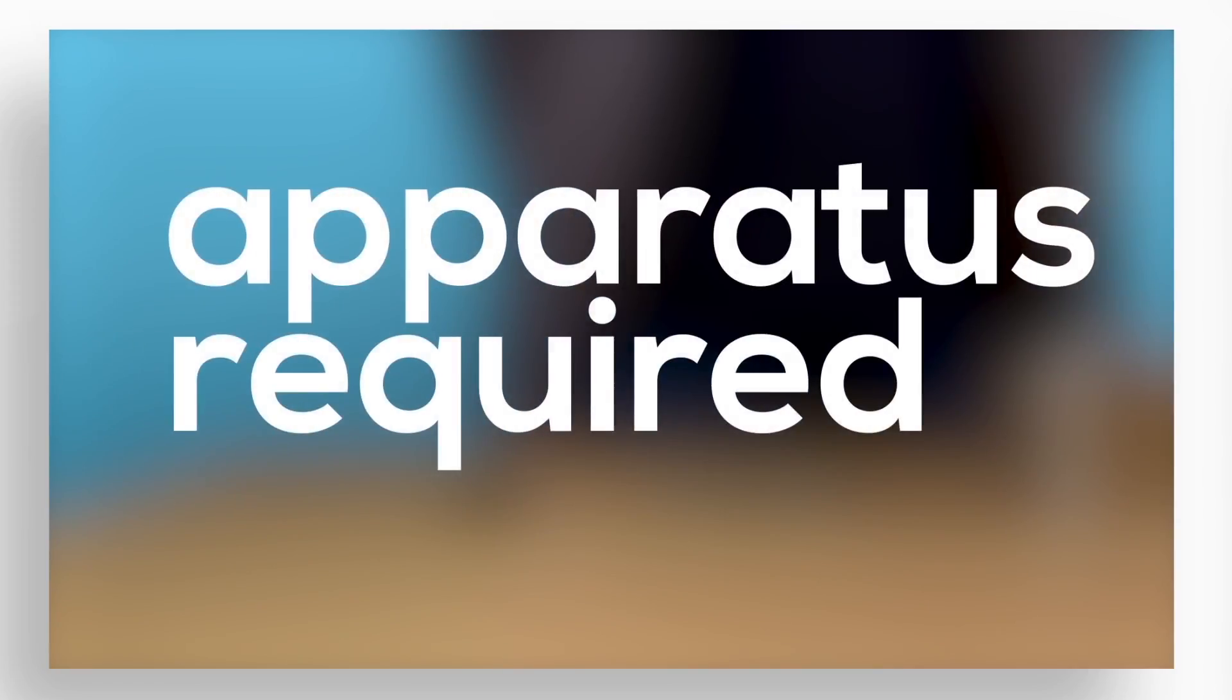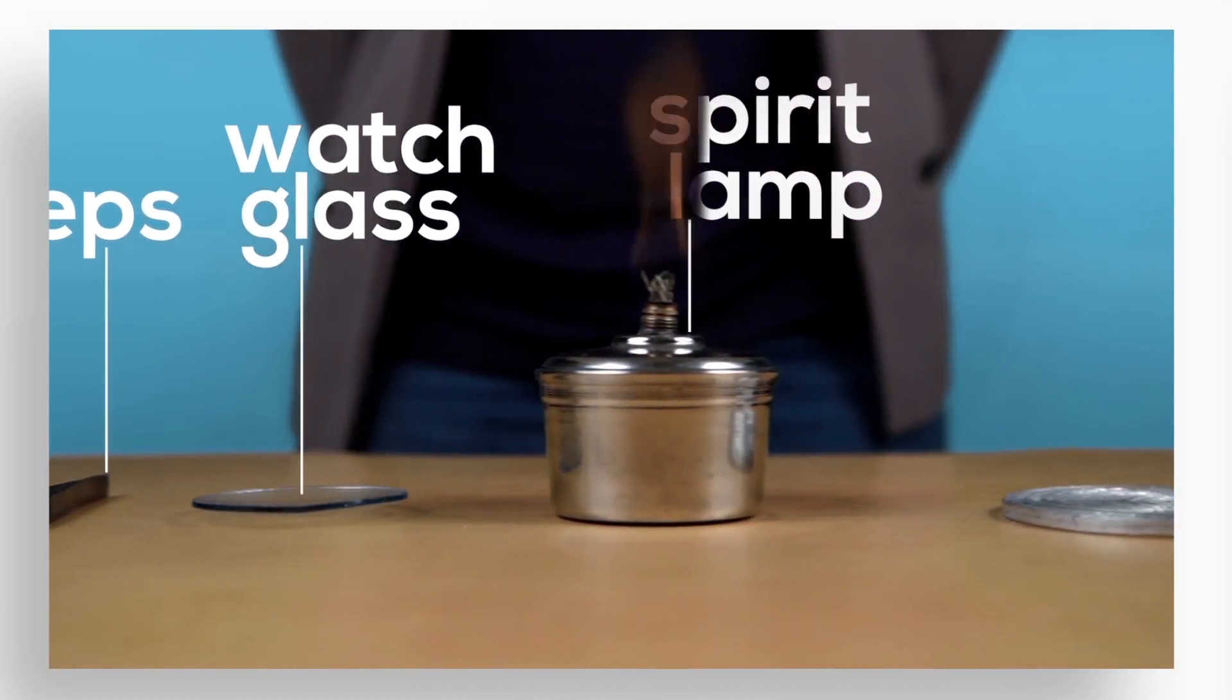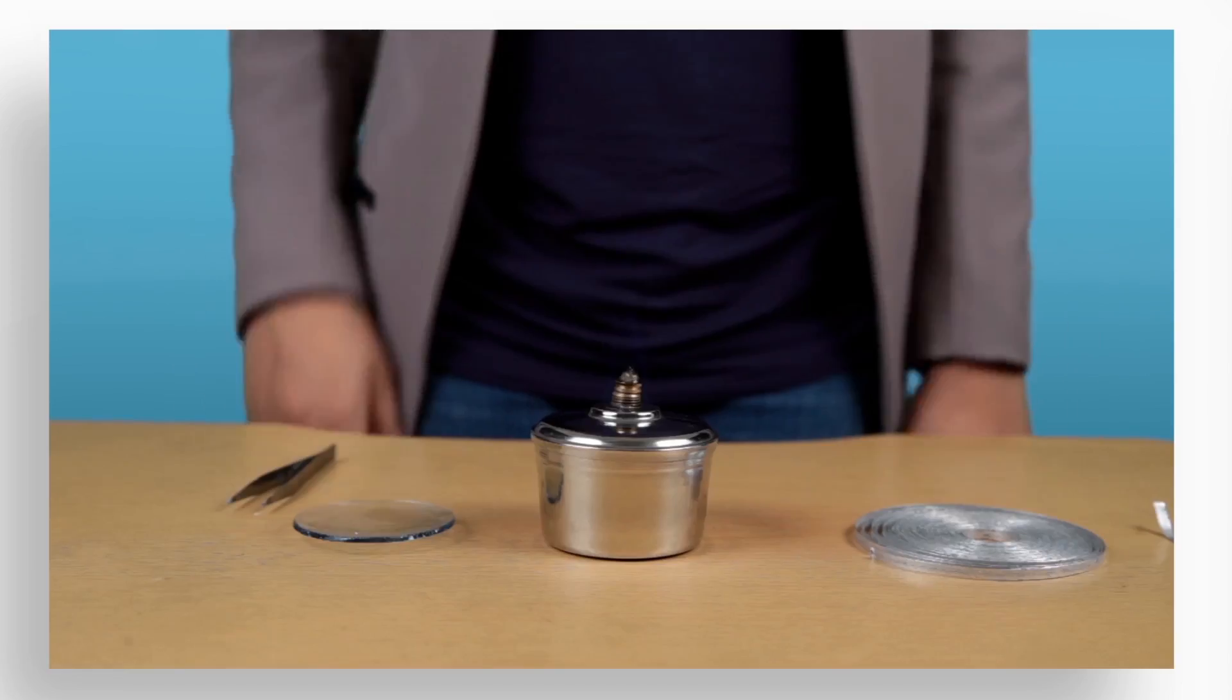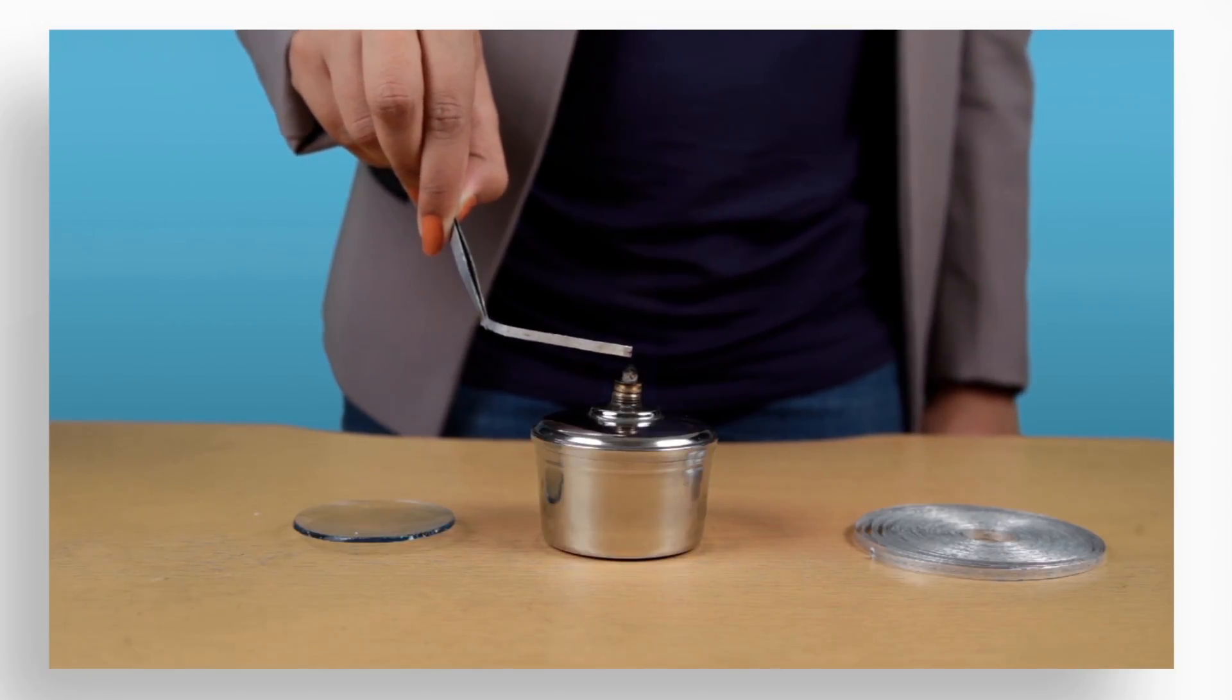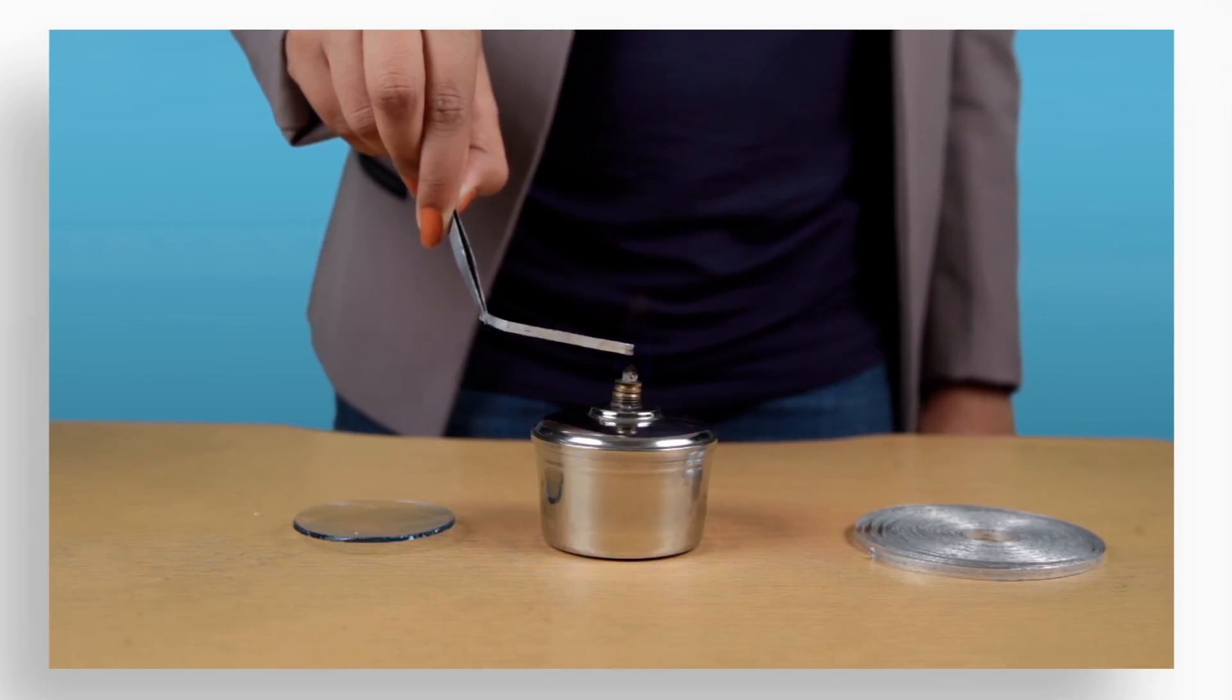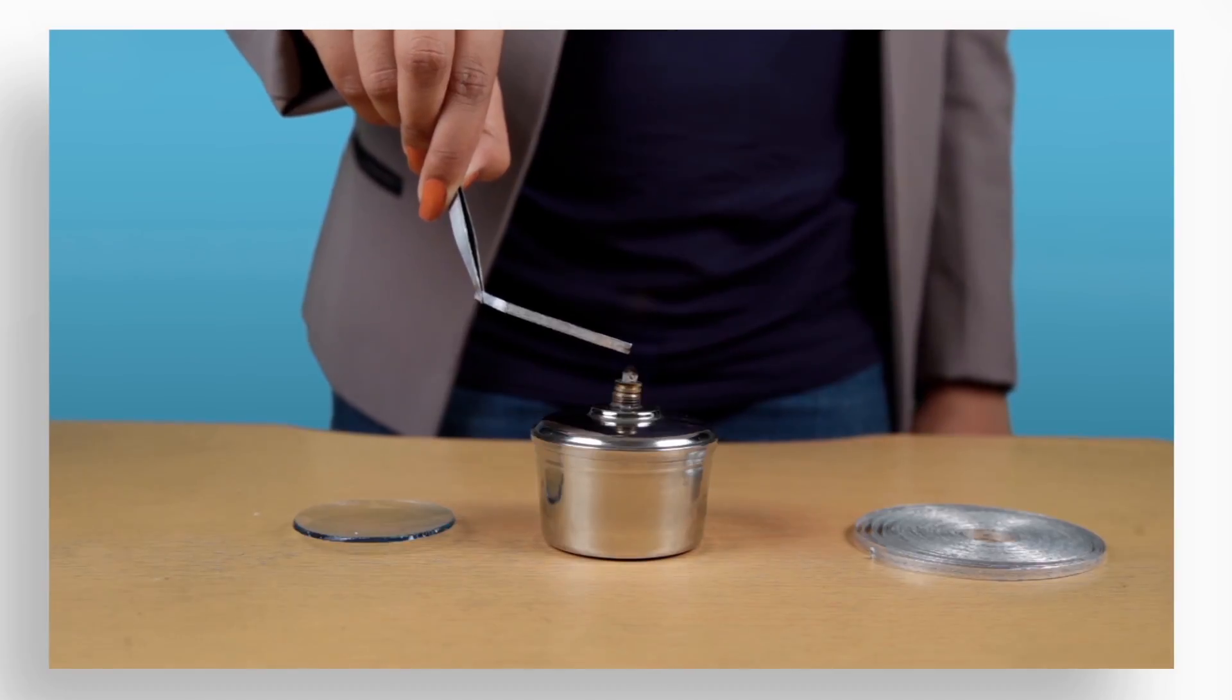For this experiment we need a forceps, a watch glass, a spirit lamp, and a magnesium strip. I will hold this magnesium strip with the help of this forceps and now I will burn it over the burner. I have put a watch glass below. I have to be cautious while carrying out this experiment by keeping my eyes as far as possible.